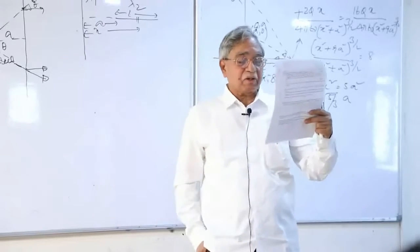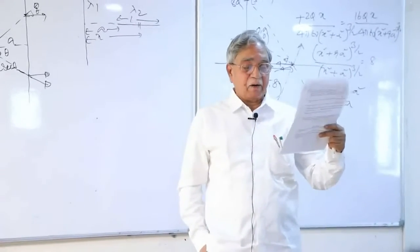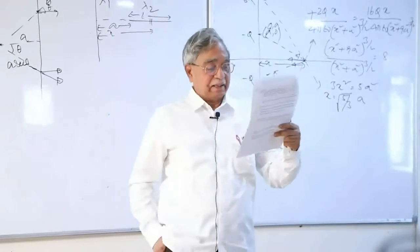An electron moves from positive to negative terminal of a battery, 9 volt. How much potential energy did it gain or lose?